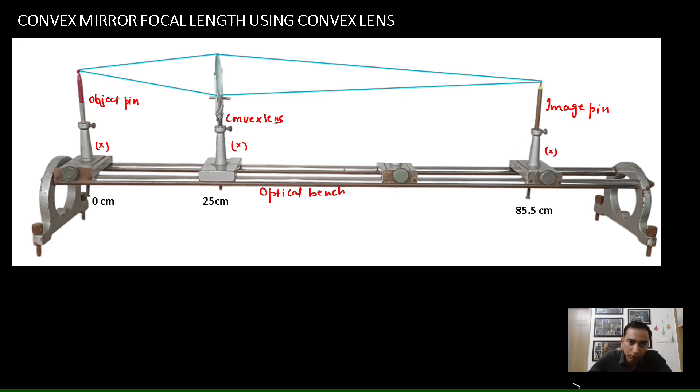What happened was, from the tip of the object pin, two incident rays came out, they got converged from the convex lens and finally they formed a real image of that red pin over here. So, the image of the red pin, which was real and inverted was formed at this point.